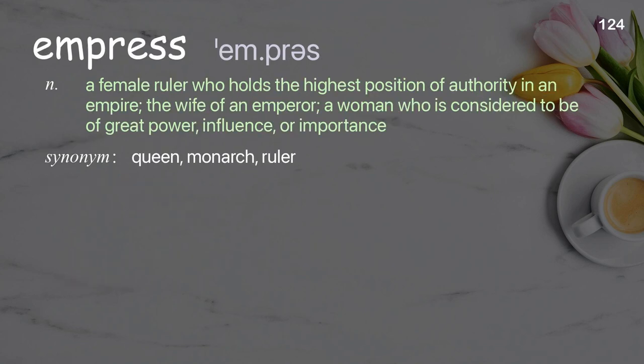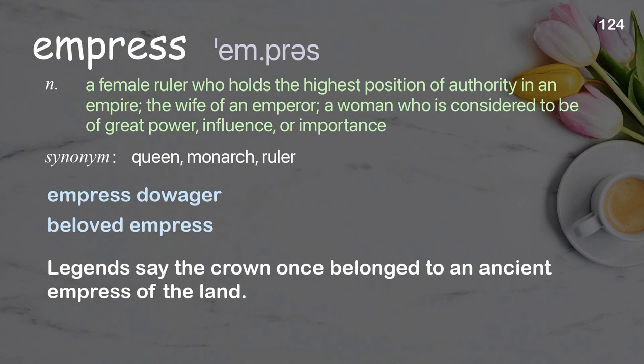Empress: a female ruler who holds the highest position of authority in an empire; the wife of an emperor; a woman considered to be of great power, influence, or importance. Examples: empress dowager, beloved empress. Legends say the crown once belonged to an ancient empress of the land.